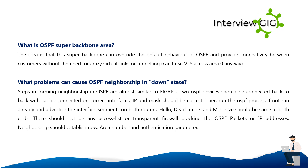What is the OSPF super backbone area? The idea is that a super backbone can override the default behavior of OSPF and provide connectivity between customers without the need for virtual links or tunneling. What problems can cause OSPF neighborship to be in a down state? Two OSPF devices should be connected back-to-back with cables on the correct interfaces. IP addresses and masks should be correct. Run the OSPF process and advertise the interface segments on both routers. Hello and dead timers and MTU size should be the same at both ends. There should be no access list or firewall blocking OSPF packets. Area number and authentication parameters must also match.